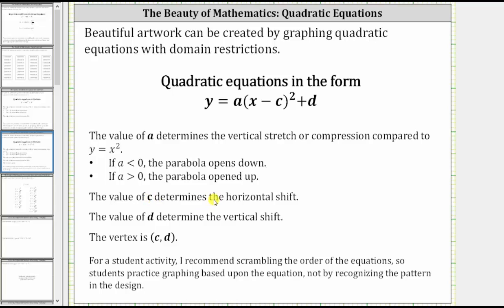The value of c determines the horizontal shift, and the value of d determines the vertical shift. Finally, the vertex is the ordered pair c comma d.